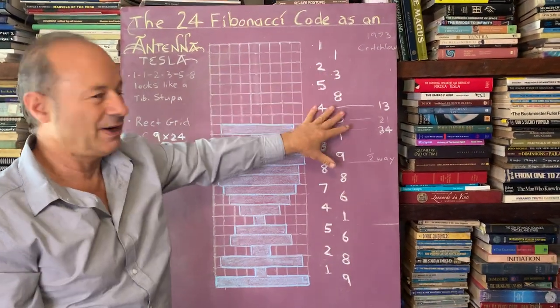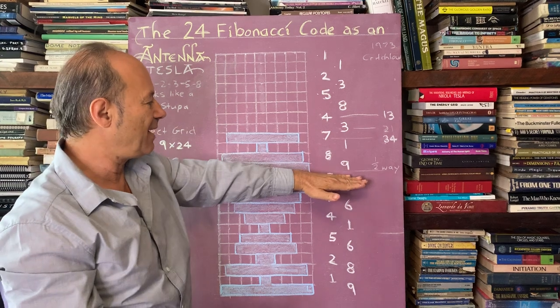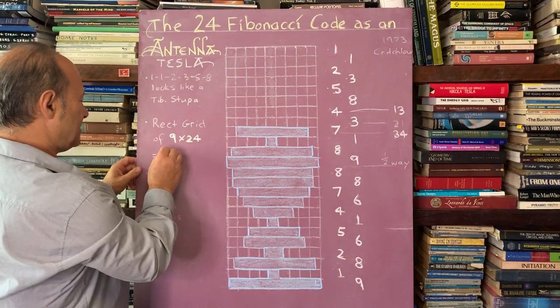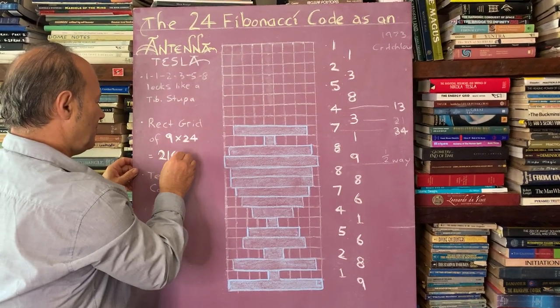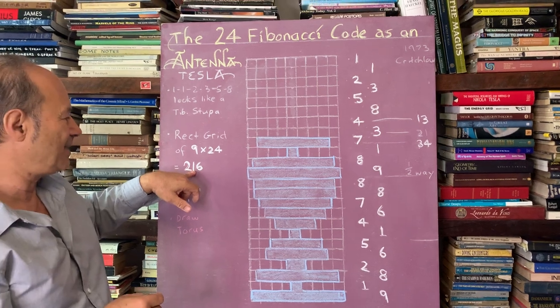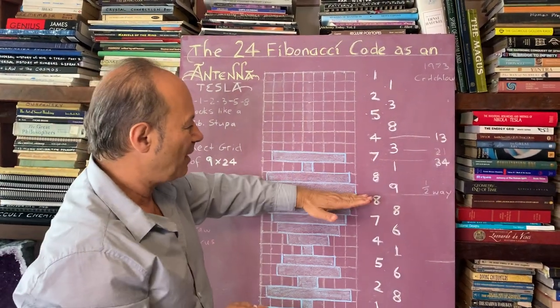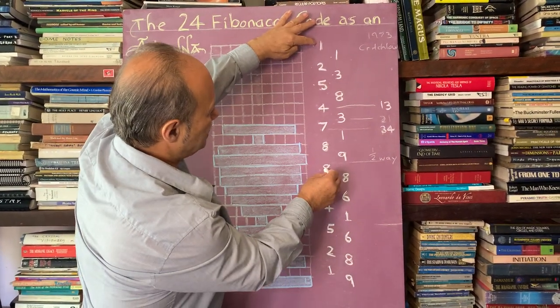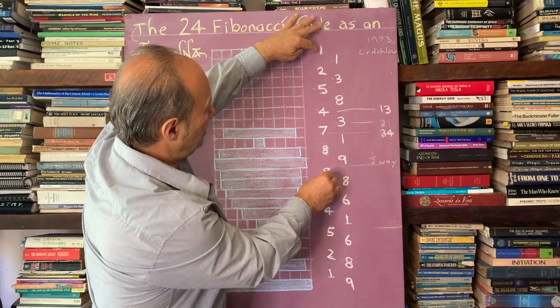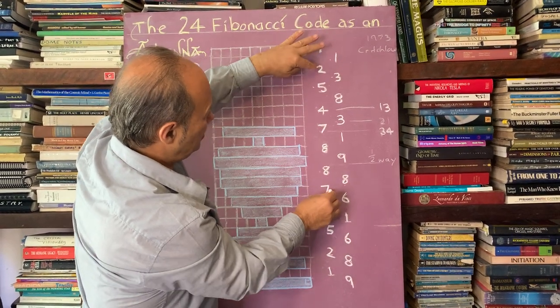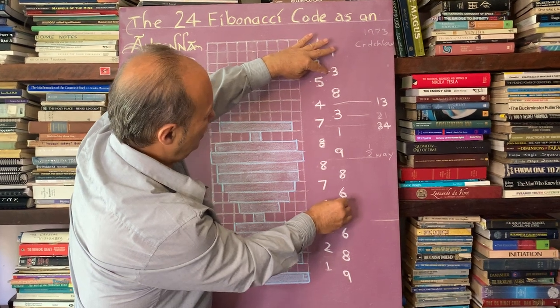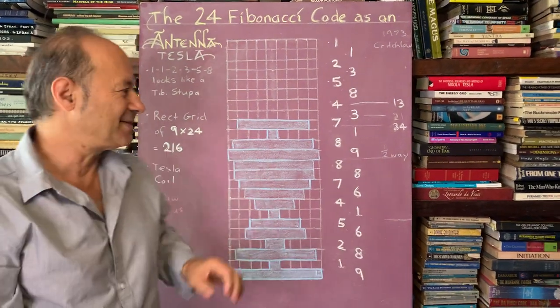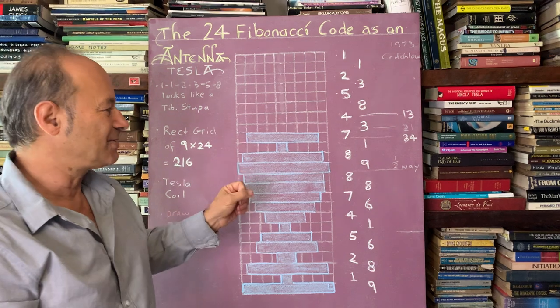So nine times the 24, well, nine times 12. If you go halfway, nine times 12 is 108. So double 108 is 216. So this is a 216 grid, which has a lot to do with the radius of the moon, 21,600 miles. The reason why there's an interesting thing at the halfway point is that every opposite pair adds up to nine. So one and eight is nine, one and eight is nine, two and seven is nine, three and six is nine, four and five is nine. All the opposite pairs on this wheel of 24 add up to nine.